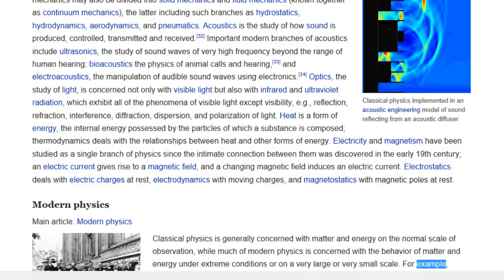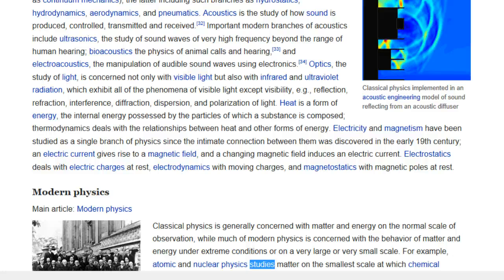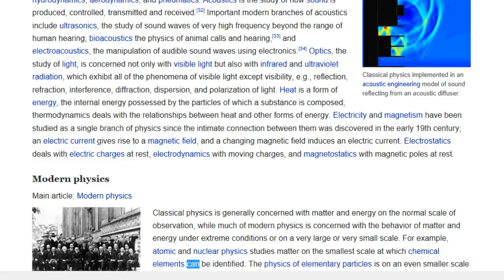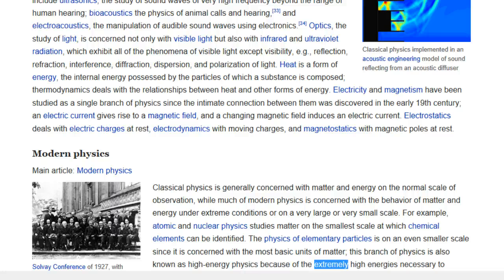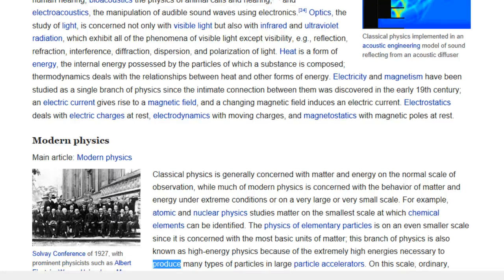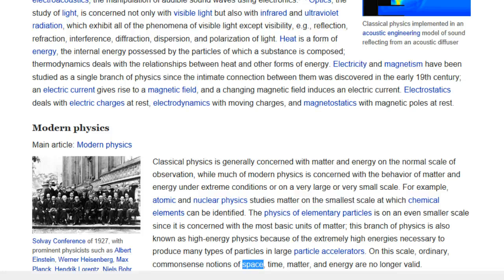For example, atomic and nuclear physics studies matter on the smallest scale at which chemical elements can be identified. The physics of elementary particles is on an even smaller scale since it is concerned with the most basic units of matter. This branch of physics is also known as high-energy physics because of the extremely high energies necessary to produce many types of particles in large particle accelerators. On this scale, ordinary, common-sense notions of space, time, matter, and energy are no longer valid.